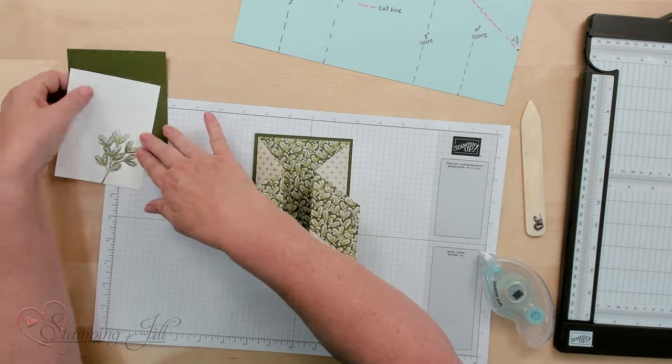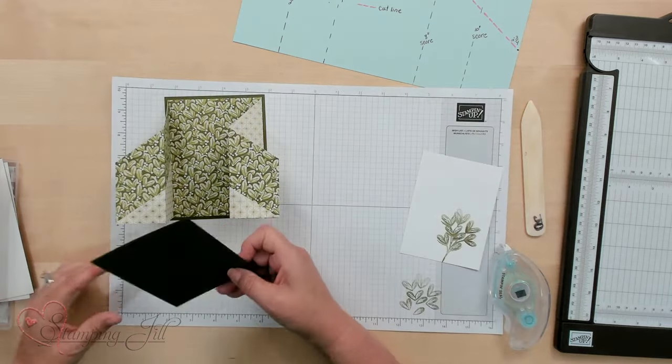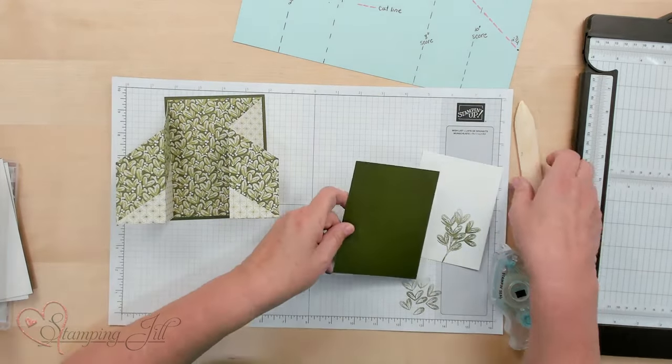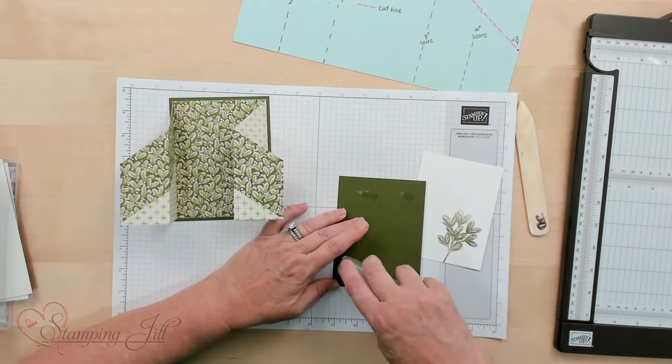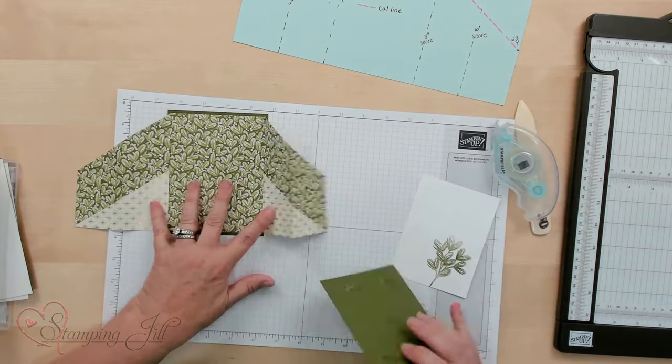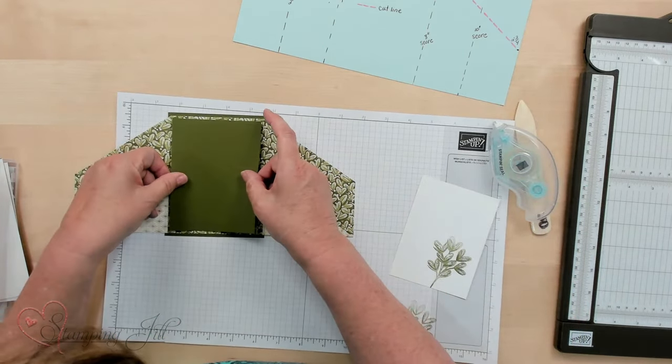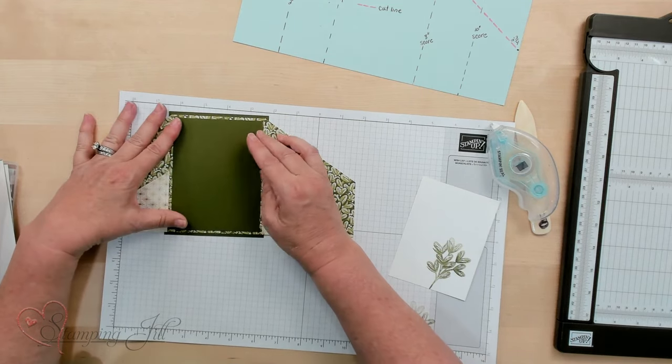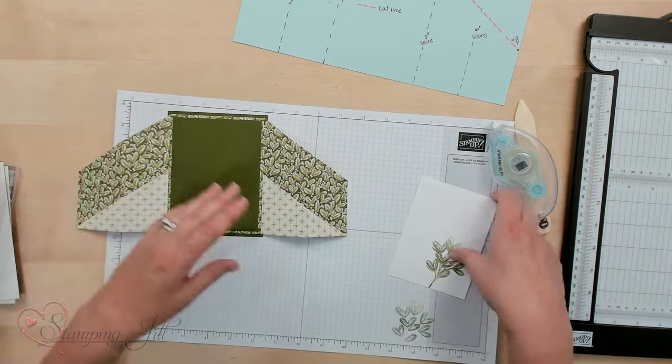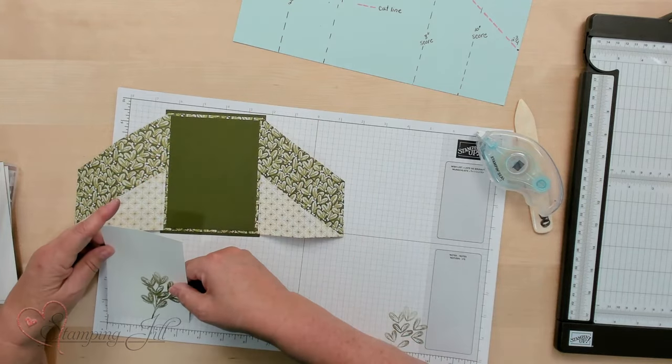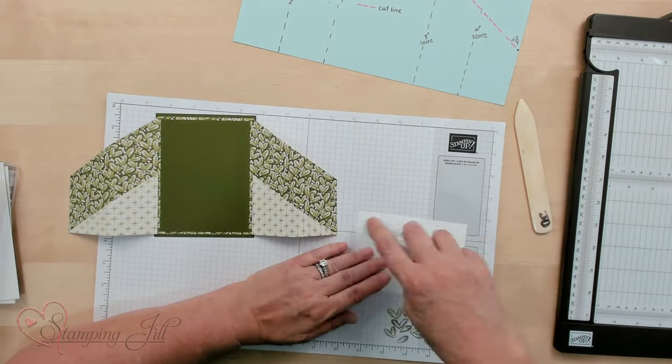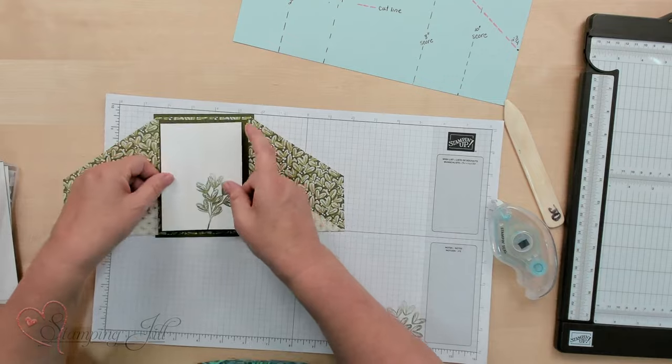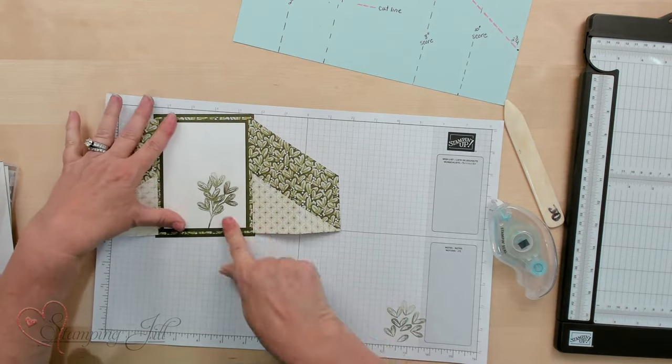Now let's go ahead and put the inside. This one is on the inside and it's 5 by 3 3/4. So that's going to be the inside solid color to frame what you've stamped for the inside. And it's got a quarter of an inch all the way around the inside of the card. And then we have the white piece, which is a quarter of an inch smaller than that, which is 4 3/4 by 3 1/2. So that's the inside of the card.